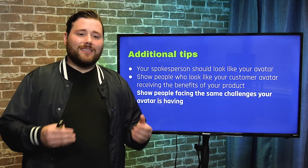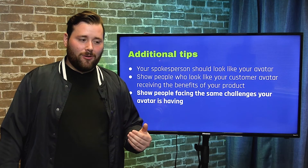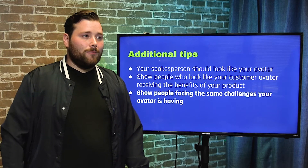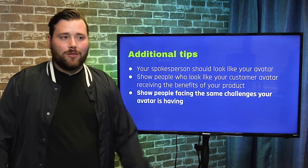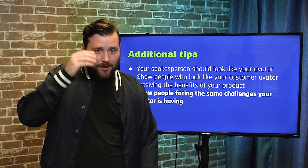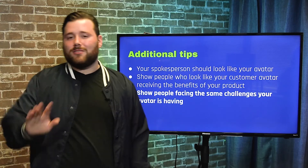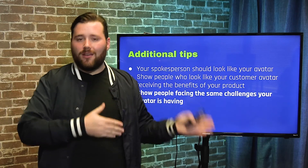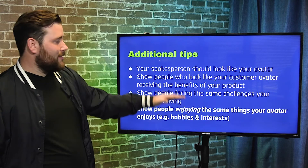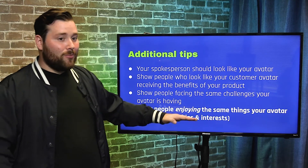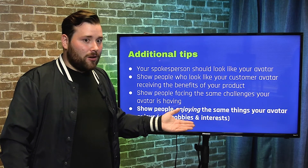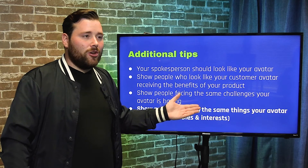You also want to show people facing the same challenges your avatar is facing. If you're advertising a health product and the pain point is not being able to keep up on the basketball court, show an overweight person sitting on the bench sweating while everyone else plays. That's why in your customer avatar you articulate hobbies and interests — so you know what to show in your b-roll when you're talking about pain points and aspirations.